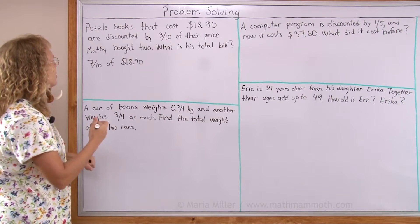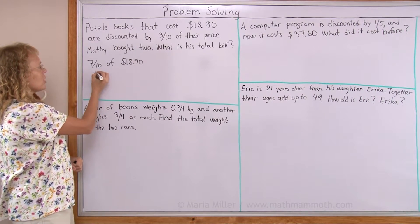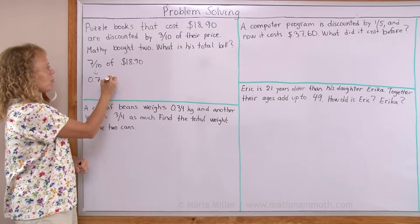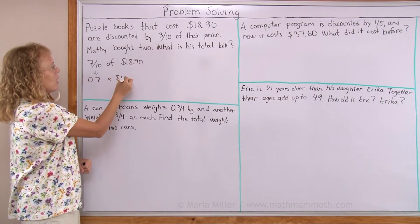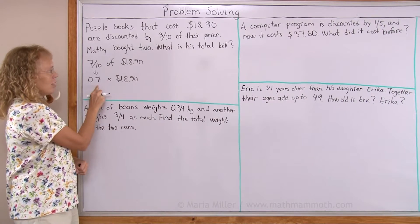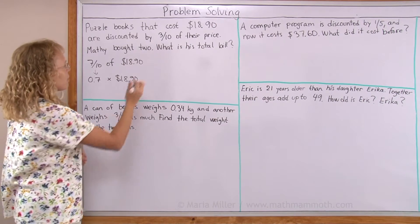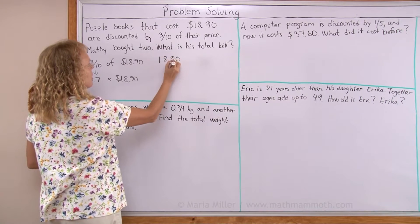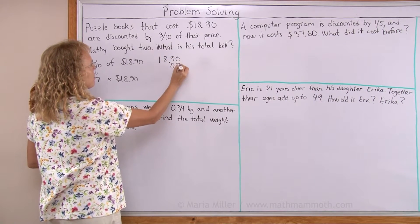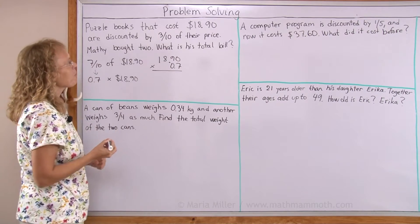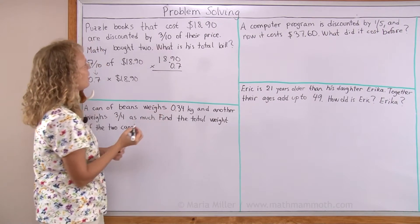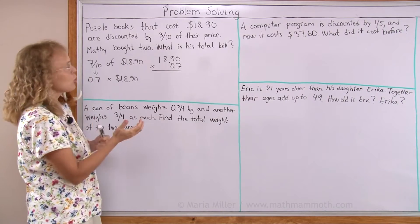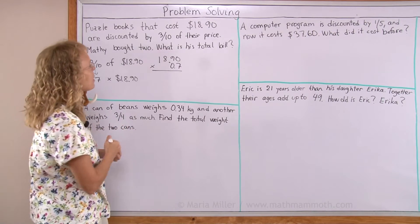Or another approach is to change this into a decimal and all changes to multiplication and now we have a multiplication problem and that's what I'm going to do. I'm going to multiply $18.90 by 0.7. And then we will get the discounted price. After that Matty bought two so we need to double that to get his bill.